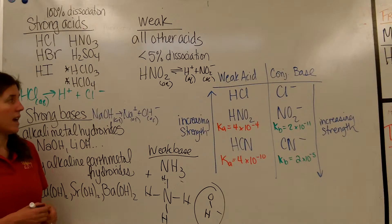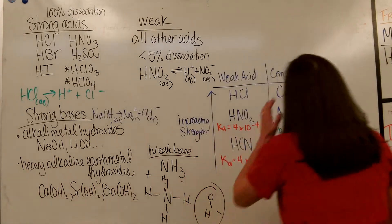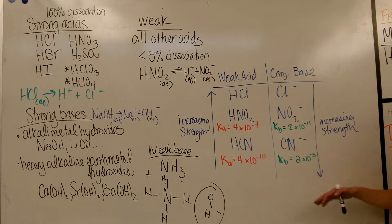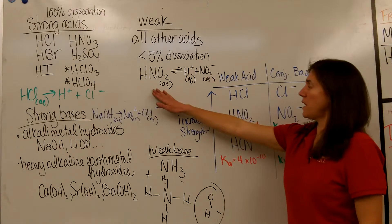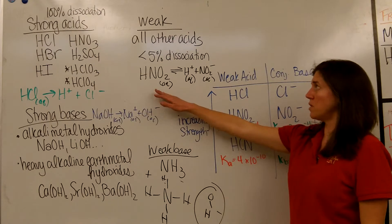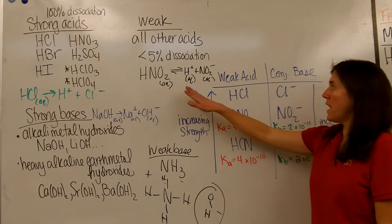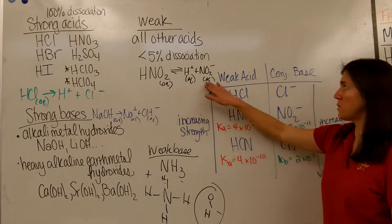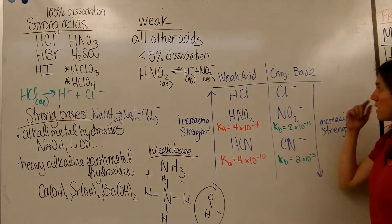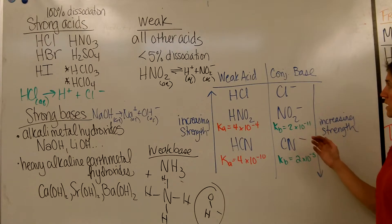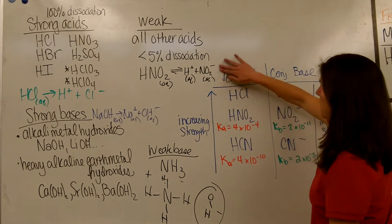So looking at acid and base strength, talking about these conjugate acid-base pairs, this right here is a weak acid, HNO2. So the ion that is left over after HNO2 dissociates, we call the conjugate base, and as the strength of your acid increases, the strength of the conjugate base decreases, and vice versa. So if you are looking at your acid, for example, HCl is a strong acid, so it totally dissociates.